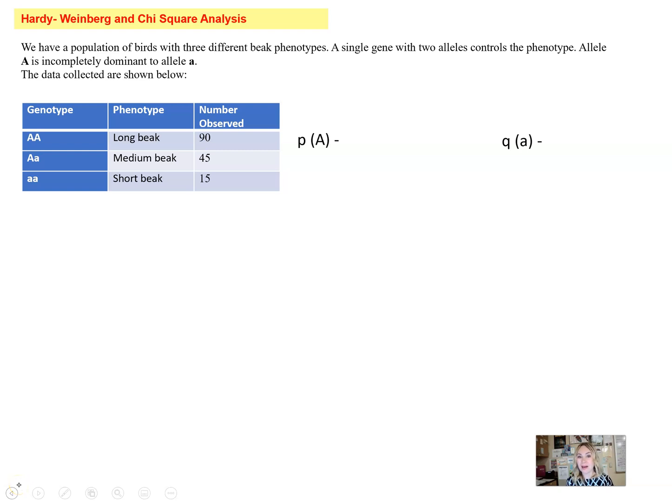Hi and welcome back! I'm so glad you're here because I want to show you how to apply chi-square analysis to Hardy-Weinberg problems so we can compare the populations, meaning we can compare the changes in the genetic makeup within the populations and see if those changes are statistically significant.